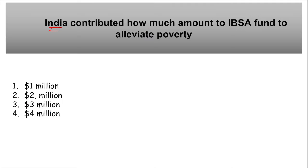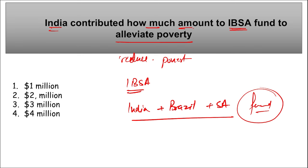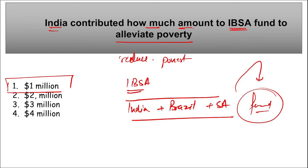India contributed one million dollars to the IBSA Fund to alleviate poverty. IBSA stands for India, Brazil, South Africa. The aim is to address development challenges such as poverty, hunger, and climate change. The IBSA Fund was established in 2004 and became operational in 2006. This one million dollar contribution was presented by Ruchira Kamboj, India's Permanent Representative to the UN.